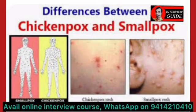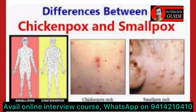The period of communicability is two days before rash and five days after, via droplets. The vaccine for chickenpox is the live attenuated OKA strain. The late complication of chickenpox is shingles, due to reactivation of the dormant virus in the nerve ganglions of the body.